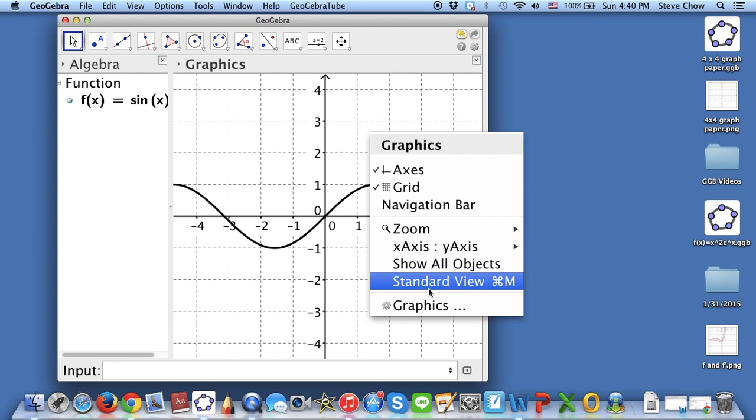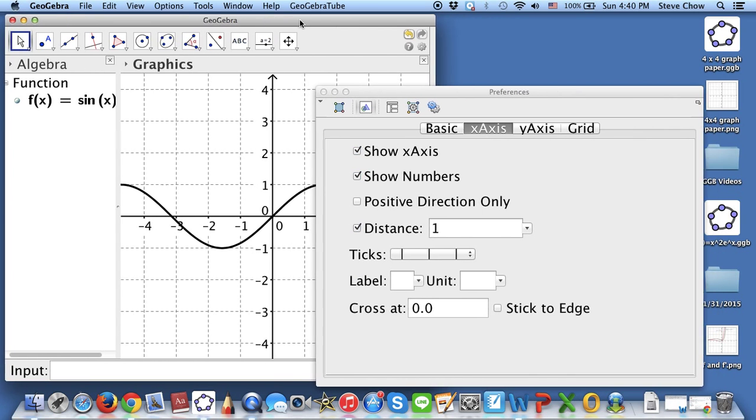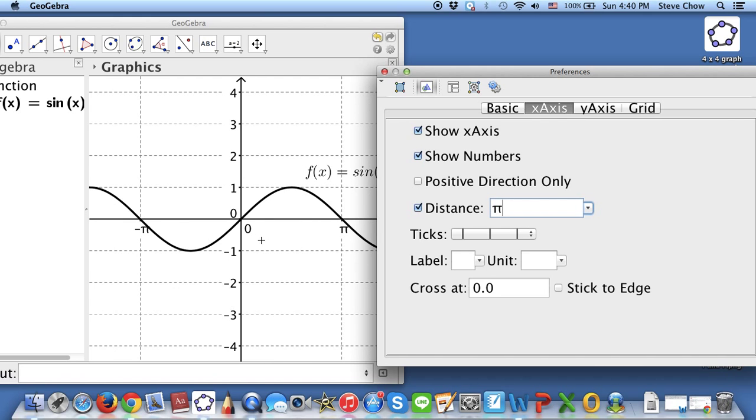Right click, and go to graphics. Go to x-axis, and then go to distance. Instead of 1, you can select either pi, and you see the change right here, or pi over 2. And it's going to go up by pi over 2 every time.